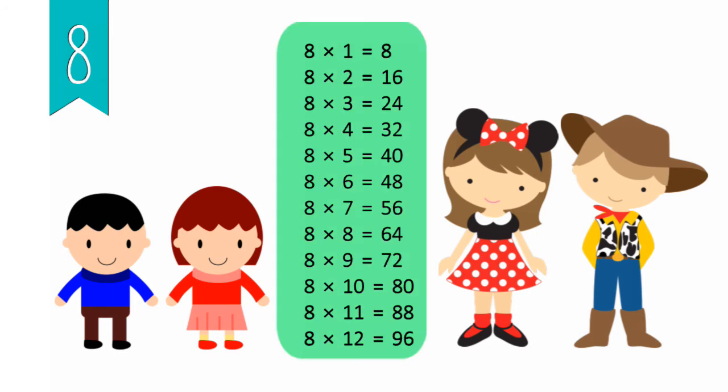8 x 1 equals 8, 8 x 2 equals 16, 8 x 3 equals 24, 8 x 4 equals 32, 8 x 5 equals 40, 8 x 6 equals 48, 8 x 7 equals 56, 8 x 8 equals 64, 8 x 9 equals 72, 8 x 10 equals 80, 8 x 11 equals 88, 8 x 12 equals 96.